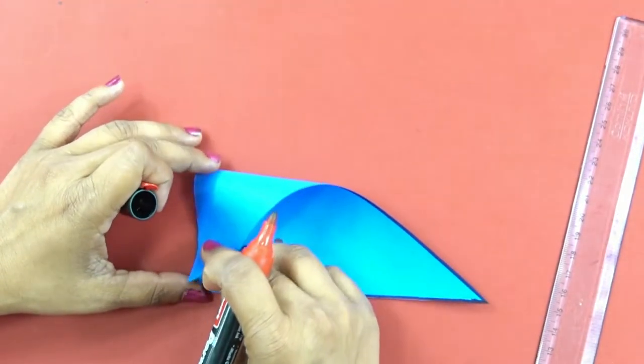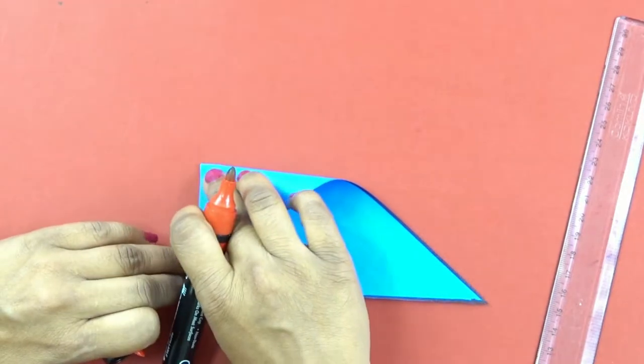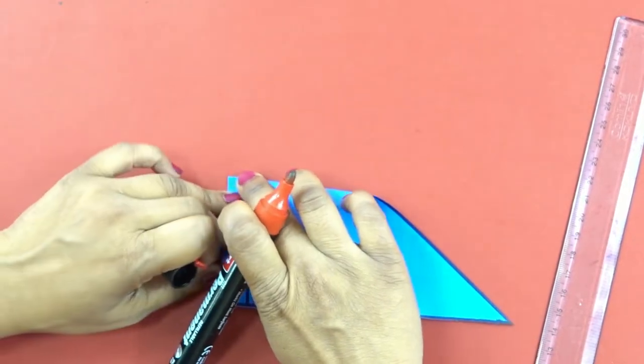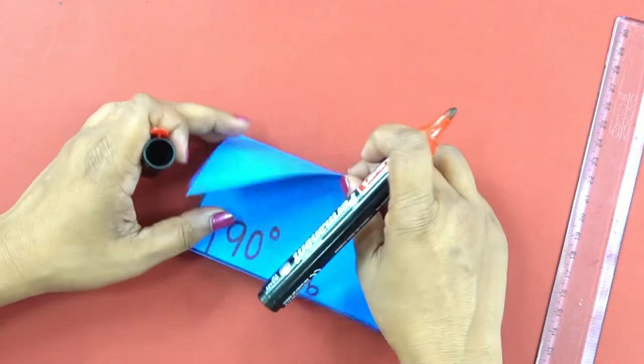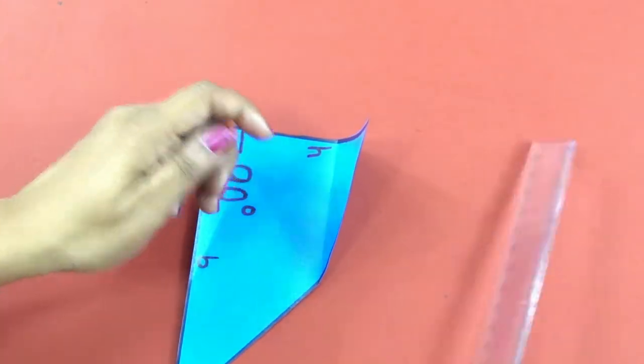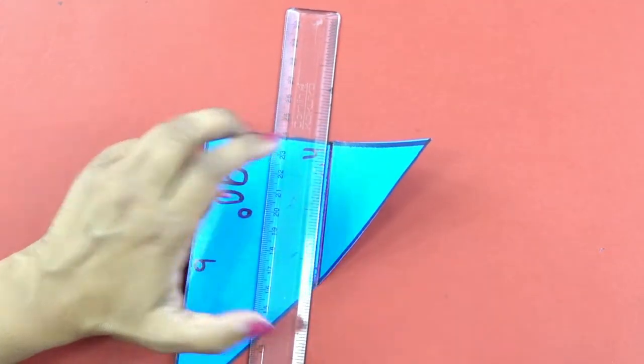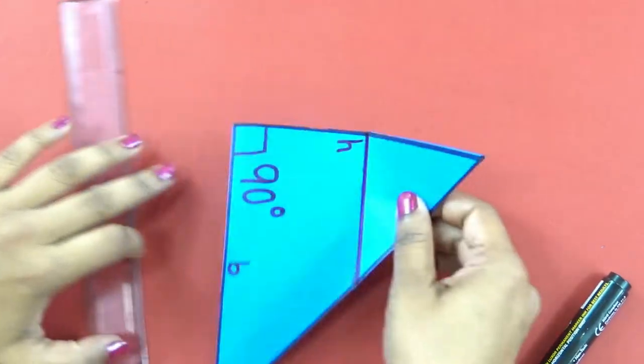Now, let me divide this height into exact half by folding, see like this. Let me cut it.